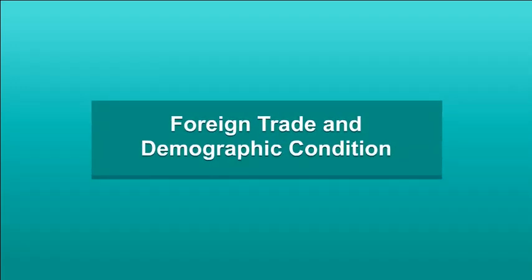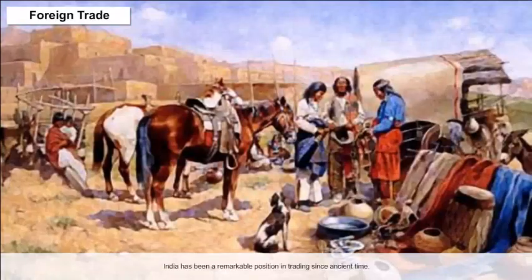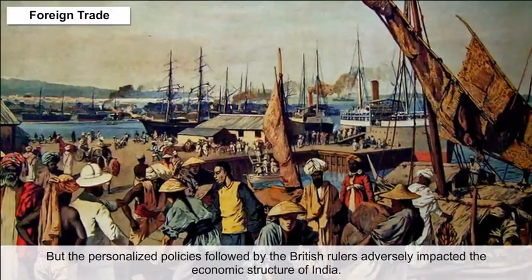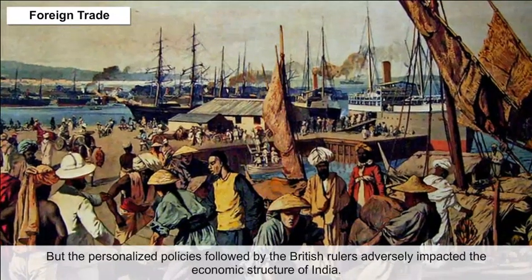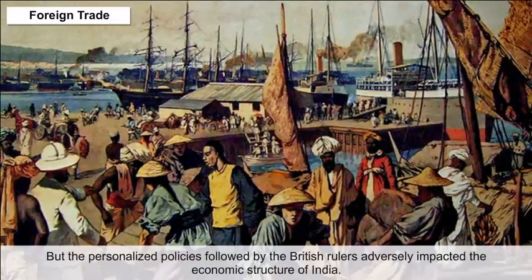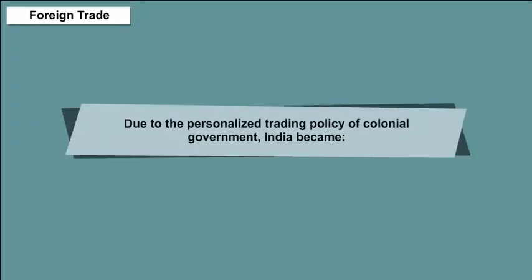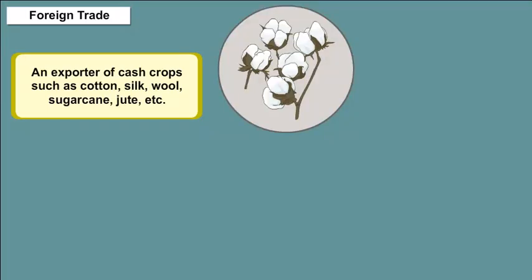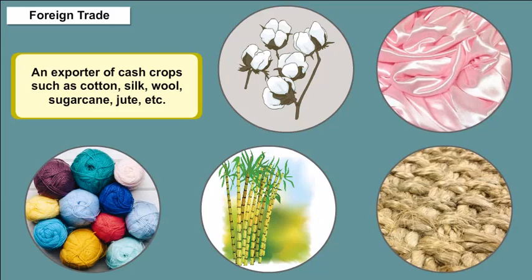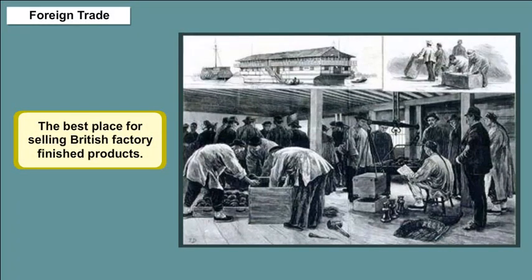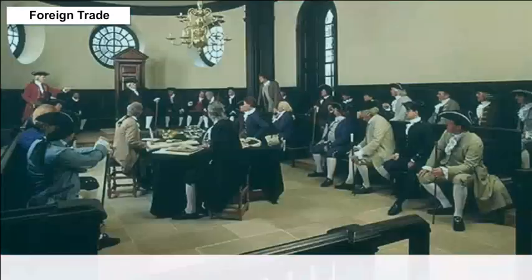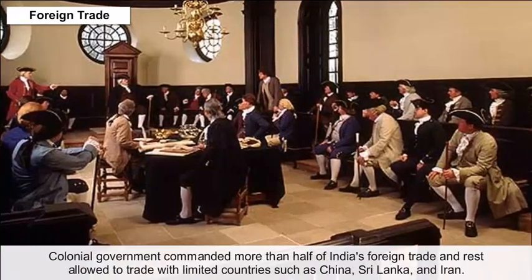Foreign Trade: India had a remarkable position in trading since ancient times. But the personalized policy followed by British rulers adversely impacted the economic structure of India. Due to the colonial trading policy, India became an exporter of cash crops such as cotton, silk, wool, sugarcane, and jute, and the best market for selling British factory finished products. The volume of India's exports was comparatively higher than its imports. The colonial government commanded more than half of India's foreign trade.